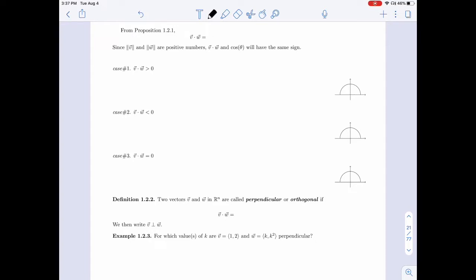So let's take V dot W. We know from Proposition 1.2.1 that it's the length of V times length of W times cosine theta. Now, these lengths here, they're positive, right? Length of V, length of W, they're a positive number.